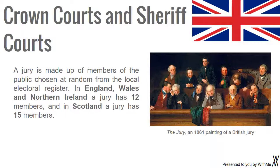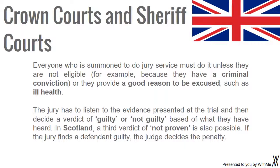A jury is made up of members of the public, chosen at random from the local electoral register. In England, Wales, and Northern Ireland a jury has 12 members, and in Scotland a jury has 15 members. Everyone who is summoned to do jury service must do it unless they are not eligible — for example, because they have a criminal conviction — or they provide a good reason to be excused, such as ill health. The jury listens to the evidence presented at the trial and then decides a verdict of guilty or not guilty based on what they have heard. In Scotland, a third verdict of not proven is also possible. If the jury finds a defendant guilty, the judge decides the penalty.